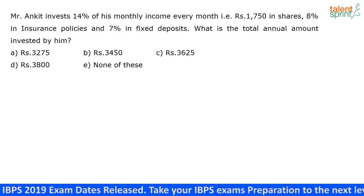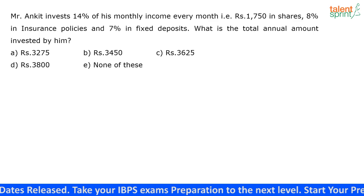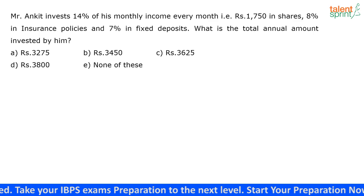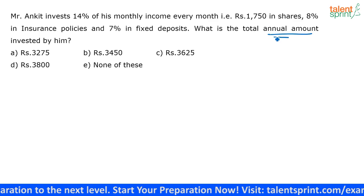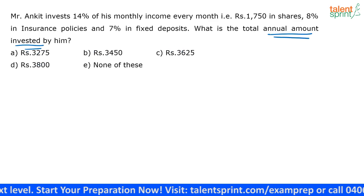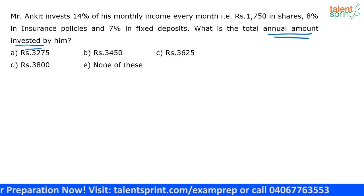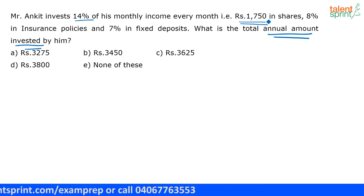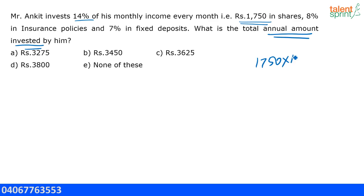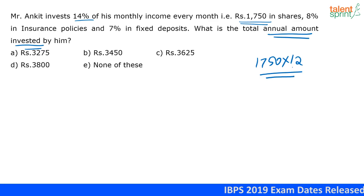For this question you should be able to give the answer in one second, because of the options. You needn't calculate this question at all. They are asking for the total annual amount invested by him. Now look at the options — none of them represent the annual amount invested; they are just representing the monthly amount. Ankit is investing Rs.1750 in shares every month, so just considering shares per year that is 1750 into 12, which itself is going to be very high.